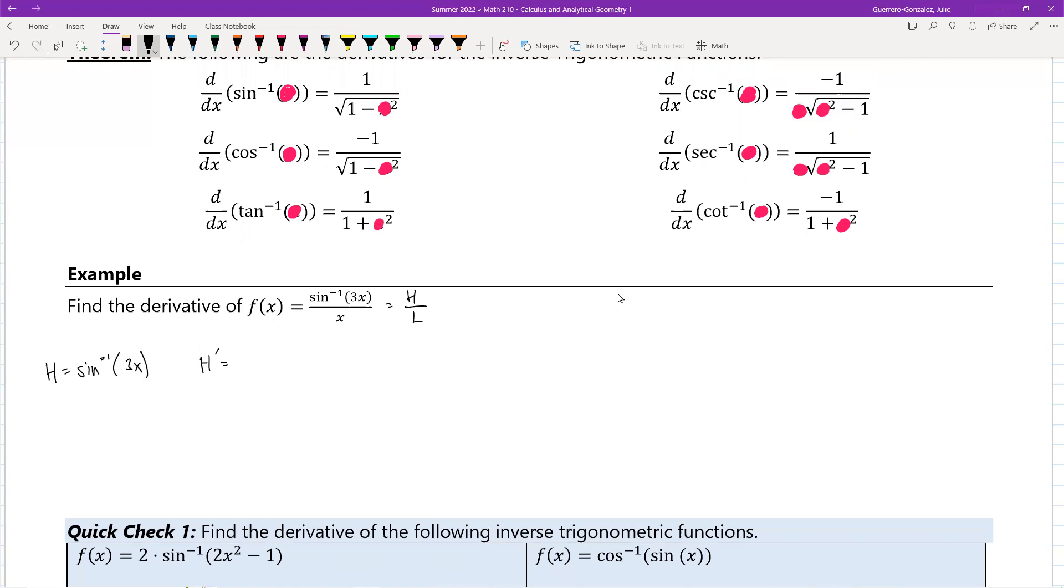Then the derivative of the high is going to be, we get to follow the rule. So keep in mind, I want to do the placeholder idea. Notice this is a chain rule. The outside is sine inverse, the inside function is the 3x.